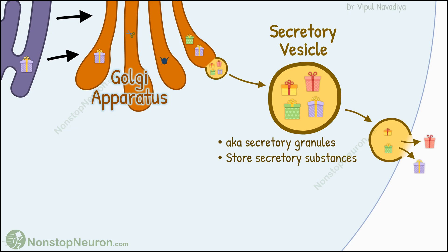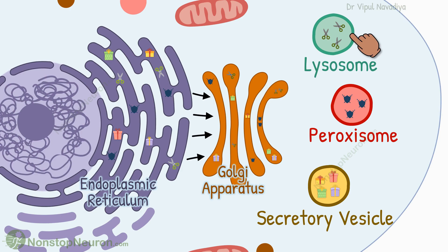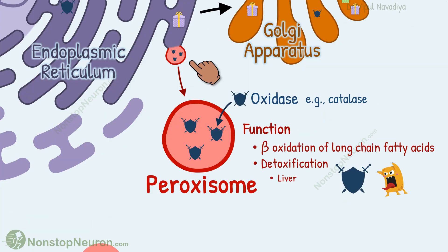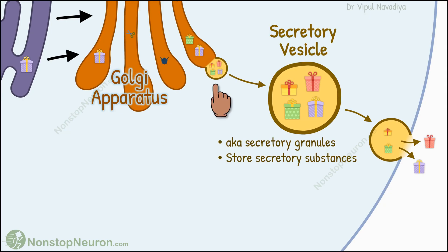That's it for secretory vesicles. Now let's have a quick summary. Lysosomes, peroxisomes, and secretory vesicles are membrane-bound vesicles. Lysosomes are formed by budding off from the Golgi apparatus; they contain hydrolase enzymes and degrade damaged cell structures, ingested food particles, and unwanted things such as bacteria. Peroxisomes are formed by pinching off from smooth endoplasmic reticulum; they contain oxidase enzymes and are involved in beta-oxidation of long-chain fatty acids and detoxification of harmful substances. Secretory vesicles are formed from the Golgi apparatus; they store secretory proteins and, when the appropriate signal comes, release their content extracellularly.